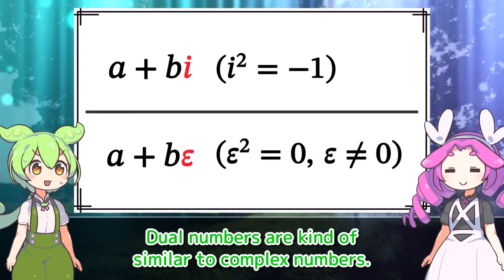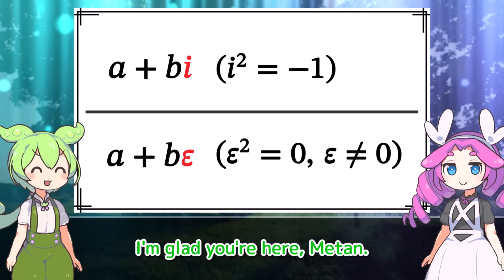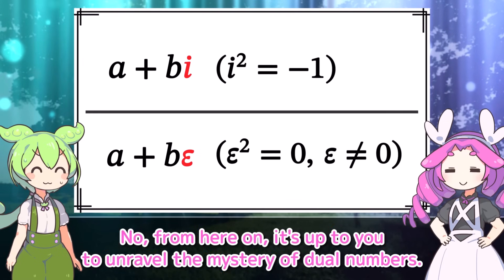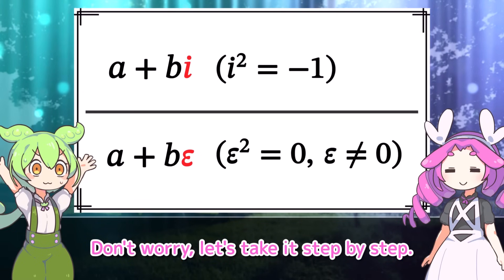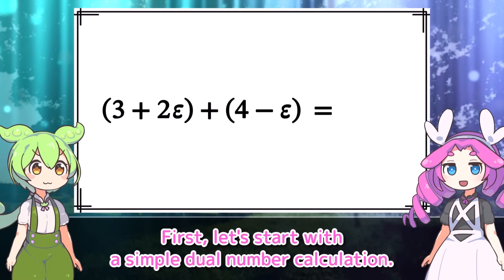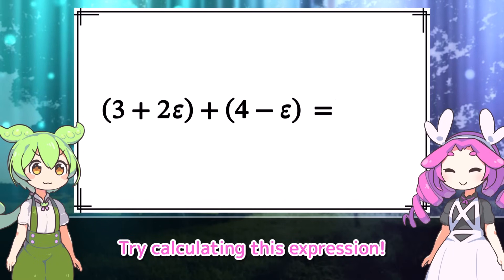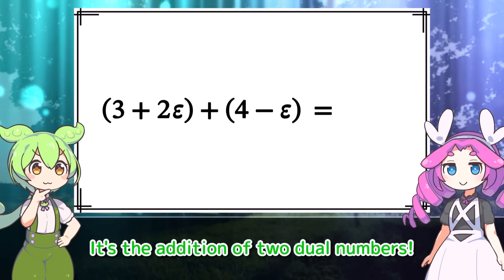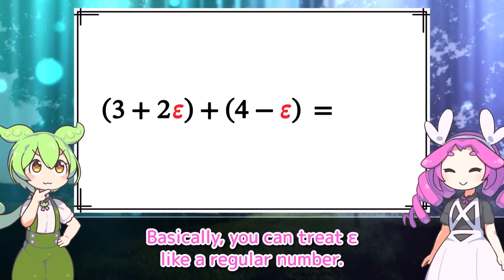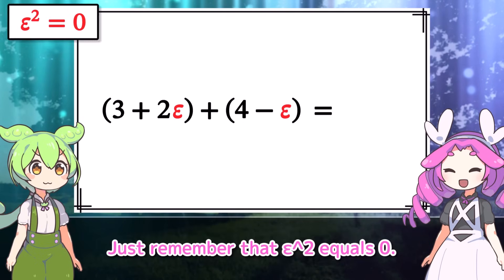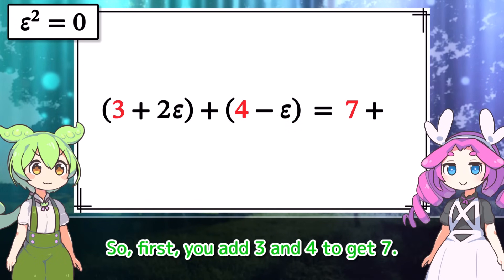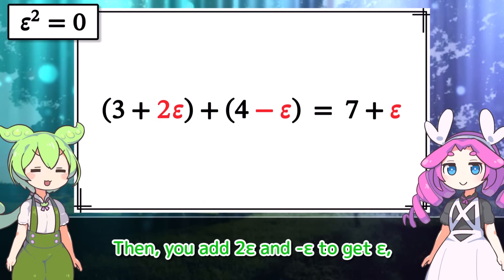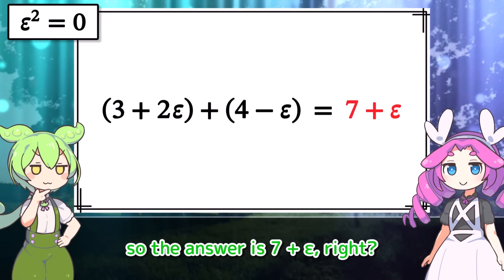Dual numbers are kind of similar to complex numbers. It's up to you to unravel the mystery of dual numbers. Let's start with a simple dual number calculation. It's the addition of two dual numbers. Basically, you can treat epsilon like a regular number — just remember that epsilon squared equals 0. First, you add 3 and 4 to get 7. Then you add 2 epsilon and negative epsilon to get epsilon. So the answer is 7 plus epsilon. Correct.